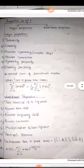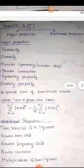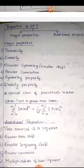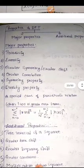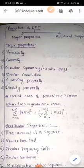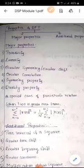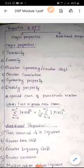This is Parseval's theorem. A special case of Parseval's theorem occurs when both signals are the same, i.e., X1(N) = X2(N). Then X(N)·X*(N) = |X(N)|². So: sigma N=0 to N-1 of |X(N)|² = (1/N) · sigma K=0 to N-1 of |X(K)|². This is the special case of Parseval's theorem, relating signal energy in time and frequency domains.